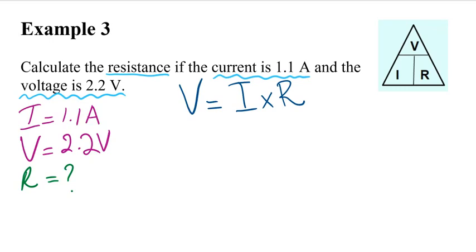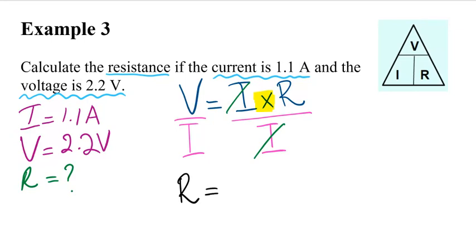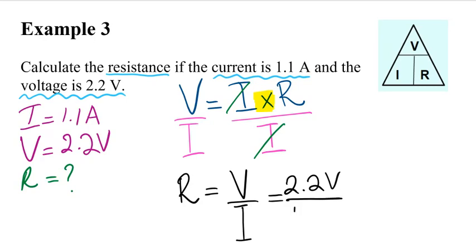Let's manipulate the formula. We need to solve for resistance, and we're multiplying I with R. The opposite of multiplying is dividing, so we divide both sides by I. They cancel each other out, and we're left with resistance equals voltage over current. Now we plug in the values: voltage is 2.2 volts, current is 1.1 amps. Dividing those numbers, the resistance is 2.2 ohms.